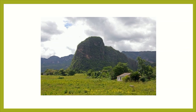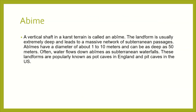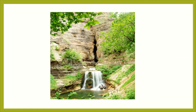Aven — it is a vertical shaft in karst terrain. The landform is usually extremely deep and leads to a massive network of subterranean passages. It has a diameter of 1 to 10 meters and can be as deep as 50 meters. These landforms are famous in England and the US.